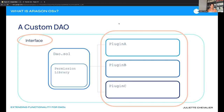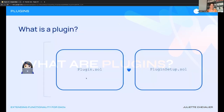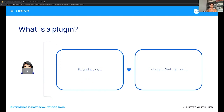Let's start with the meat of this: what are plugins? Every plugin will always have two contracts. On the first level we have the plugin implementation contract — this is the implementation containing all of the logic that plugin can do. If you're building a governance plugin or a finance plugin, all that functionality will be stored in this plugin contract.